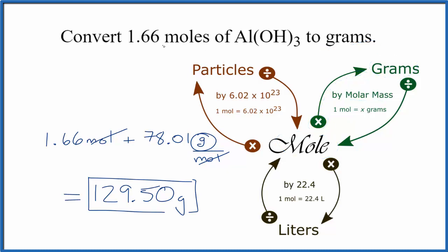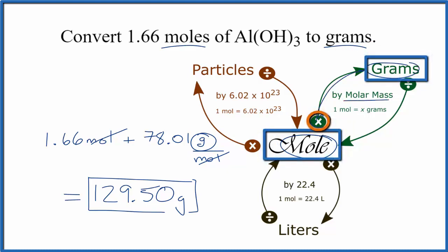To recap, we're going from moles to grams. Moles to grams, we multiply by the molar mass. That gives us the grams of aluminum hydroxide.